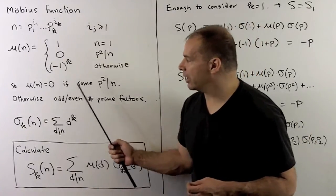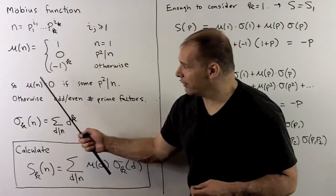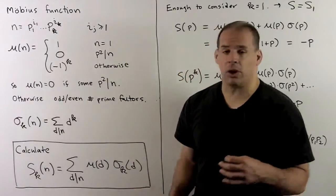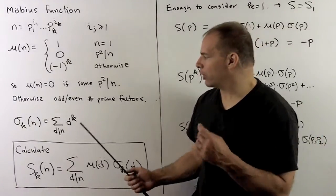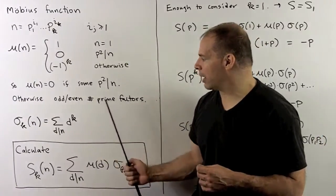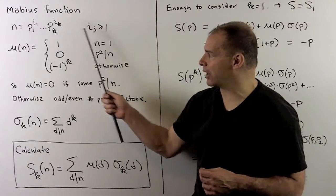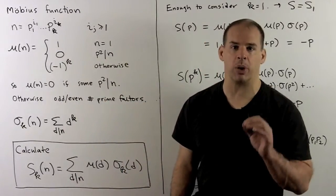So what's happening here? We'll have mu of n equal to 0 if some squared prime divides n. Otherwise, what we're doing is counting whether there are an odd or even number of prime factors in the factorization, and there's no exponents.